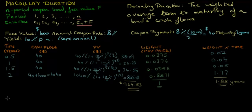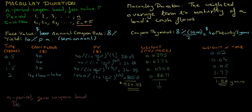It follows from this that if we have an N-period zero-coupon bond, then the Macaulay Duration of this bond, denoted by D with a subscript MAC, equals N. That's because a zero-coupon bond does not realize any cash flows until maturity, so the weighted average term to maturity of a zero-coupon bond's cash flows is the maturity itself.